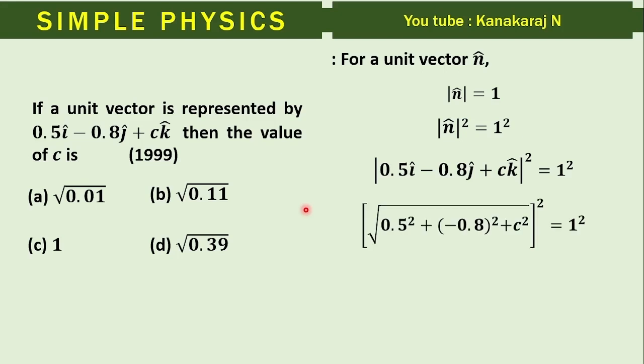So by using this formula we get square of root of 0.5 square plus minus 0.8 square plus c square equals 1 square.